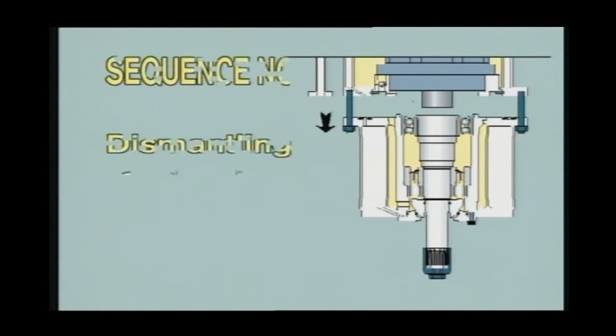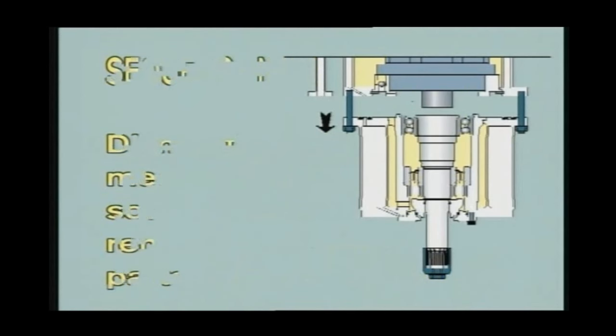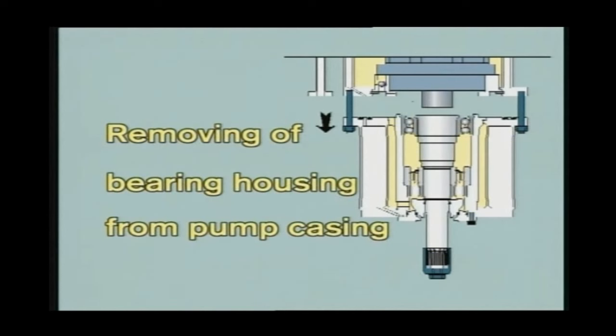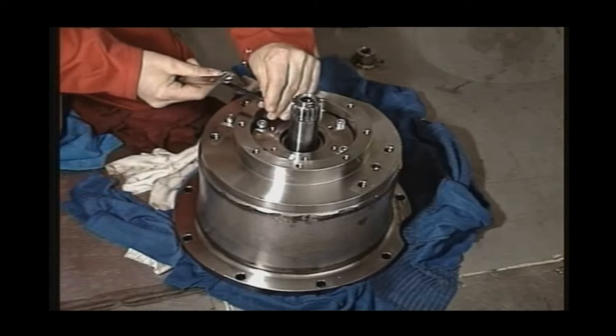Sequence number three: dismantling of mechanical oil seal or other remaining rotating parts in the cargo pump. The mechanical seal can be dismantled without draining the hydraulic oil from the pump stack. The easiest way to dismantle the mechanical seal is first to remove the bearing housing from the pump casing.